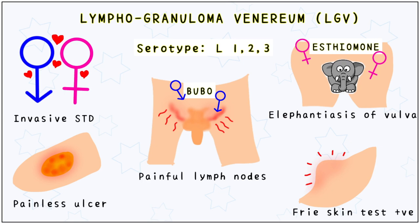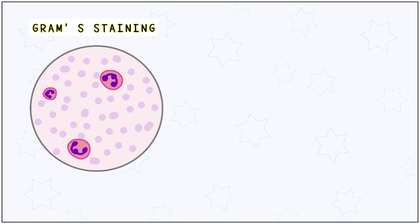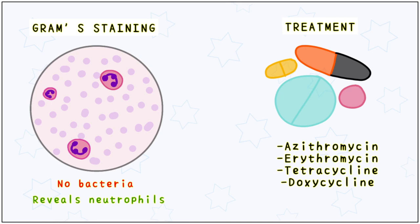For the diagnosis of chlamydia, it is important to remember that gram staining reveals no bacteria. Neutrophils are present, indicating pyuria. This is a common question that can be asked in the form of MCQs. Chlamydia cannot be cultured on inert media because it is an intracellular organism. For the treatment, we use azithromycin, erythromycin, doxycycline, and tetracycline.